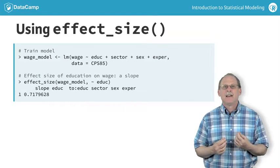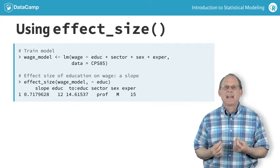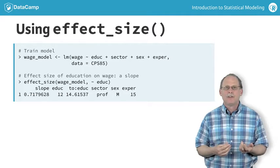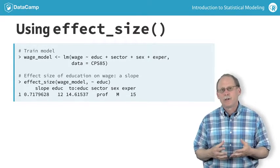Effect_size calculates an effect size for you. The main advantage here is that effect_size scans your data to find appropriate values for the explanatory variables and an appropriate step size for the explanatory variable whose effect size you are looking for.